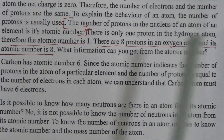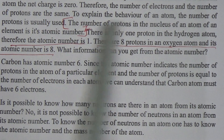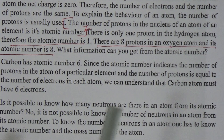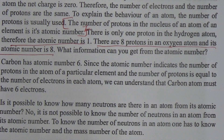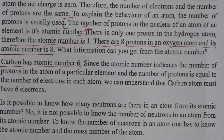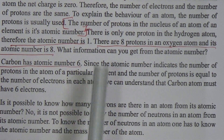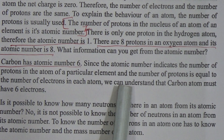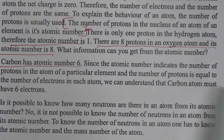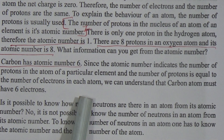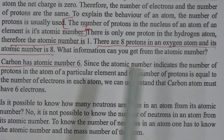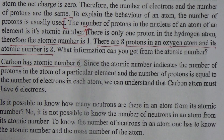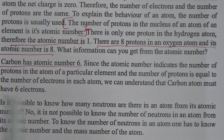Carbon has atomic number six. Since the atomic number indicates the number of protons in the atom of a particular element, and the number of protons is equal to the number of electrons in each atom, we can understand that a carbon atom must have six electrons.